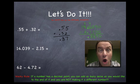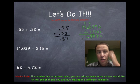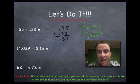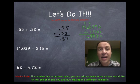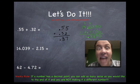Drop down the decimal point. Don't forget. If you don't, your answer will be all wrong. Three minus two is one. One minus zero is one. Our answer to 14.039 minus 2.15 is 11.889 or 11 and 889 thousandths or 11 and 8,890 ten thousandths.